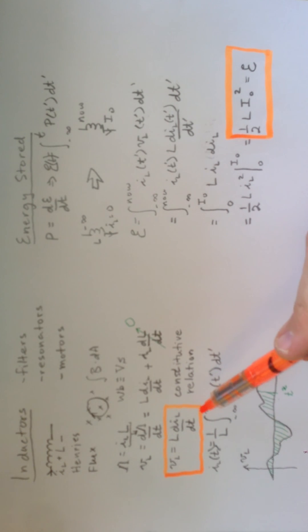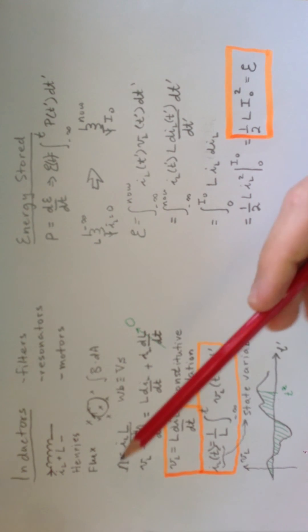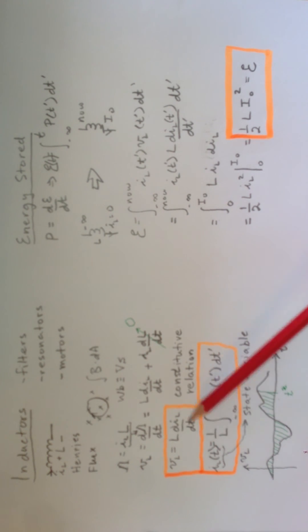Also, don't forget the constitutive relation. That's something that's worth committing to memory, as well as this IL. And this IL, I'll mention, has a special name. It's called the state variable, because it tells you what state the inductor is in. So, I think the key things to remember is this notion of flux, this constitutive relation, the state variable, and the energy stored in an inductor.